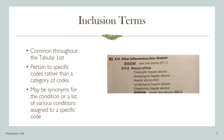Inclusion terms may be synonyms for the condition or a list of various conditions assigned to a specific code. For example, K-75.0, abscess of liver, and you can see all of the inclusion terms. This is not an exhaustive list, but all of these terms indicate that these conditions still fit within the code description, so it is still acceptable to assign this code.